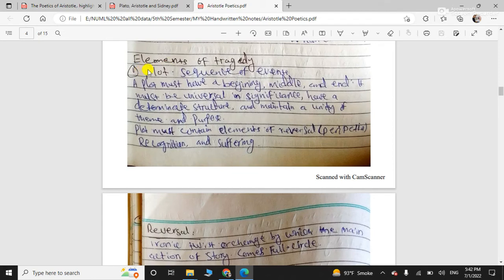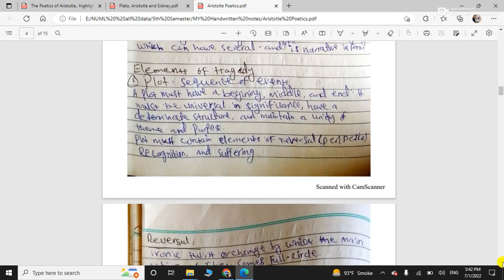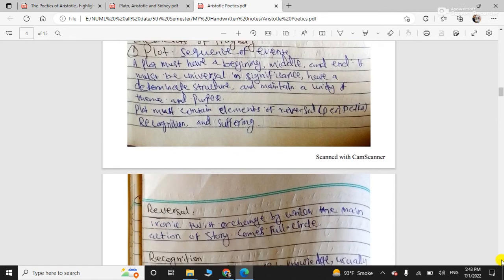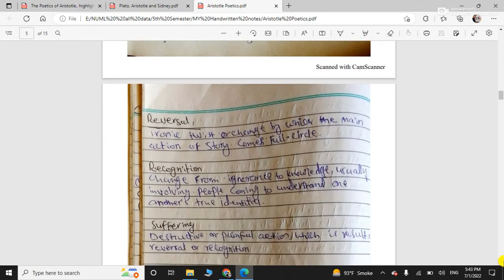And elements of tragedy, six elements we talked about. The first one is the plot. Plot is the most important part of tragedy. It is the soul of the tragedy. Plot is called the soul of the tragedy. So, general concept you will have that plot is called sequence of events. So, a plot must have a beginning, middle and end. It must have universal significance and have a determinate structure. And it maintains unity of theme and purpose. And the elements, it must contain the elements of reversal, recognition, suffering and all of these. We will discuss them in detail.